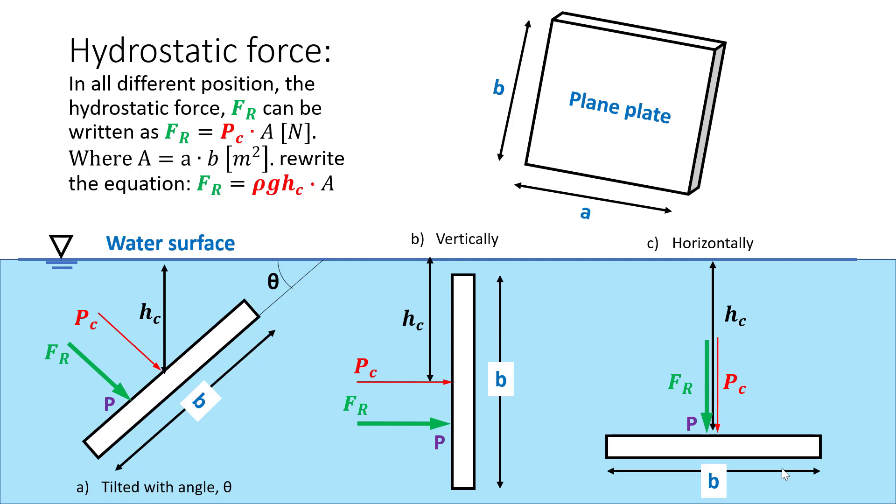If the average pressure Pc is also acting at the centroid, the hydrostatic force is acting at the pressure plane body, which is point P, below the point C.